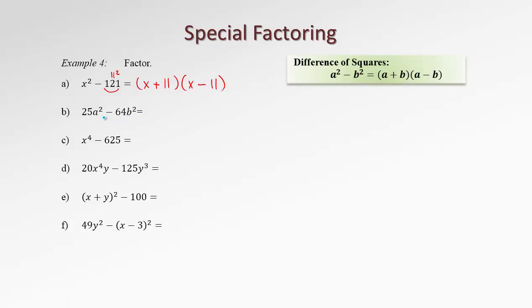In the next example, we see a difference, and as soon as we realize that these two terms are actually perfect squares of something, we can use the difference of squares formula. The first term is a perfect square of 5a, and the last term is really the same as 8b squared. So we use the two brackets with terms 5a and 8b, then place plus in one bracket and minus in the other.